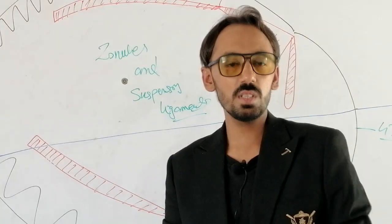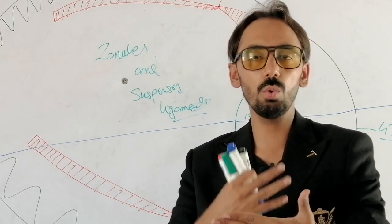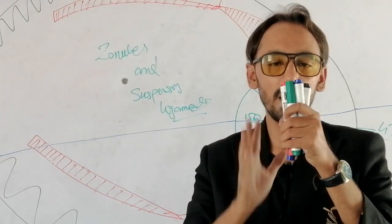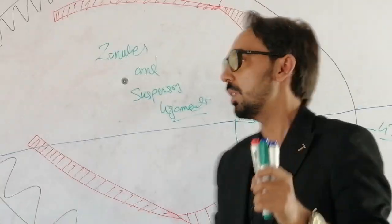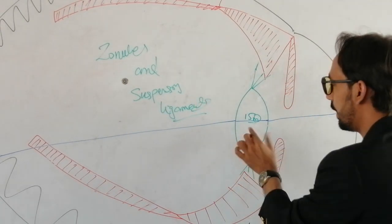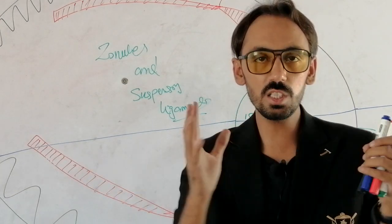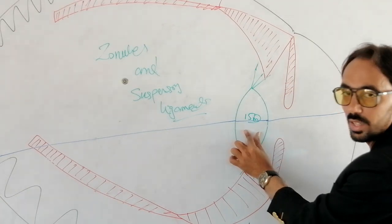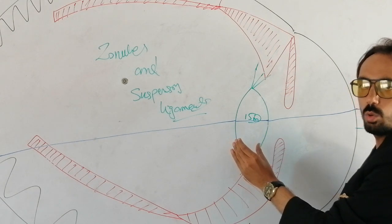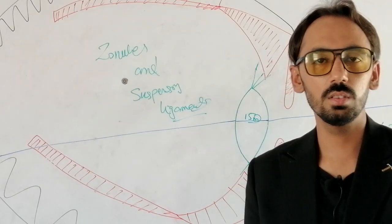Through these zonules or suspensory ligaments, the lens has the ability to increase its power. When we look at a near object — when we want to read or write — the lens increases its power. This increase in the dioptric power of the crystalline lens, from 15 diopters to a maximum, is called accommodation.